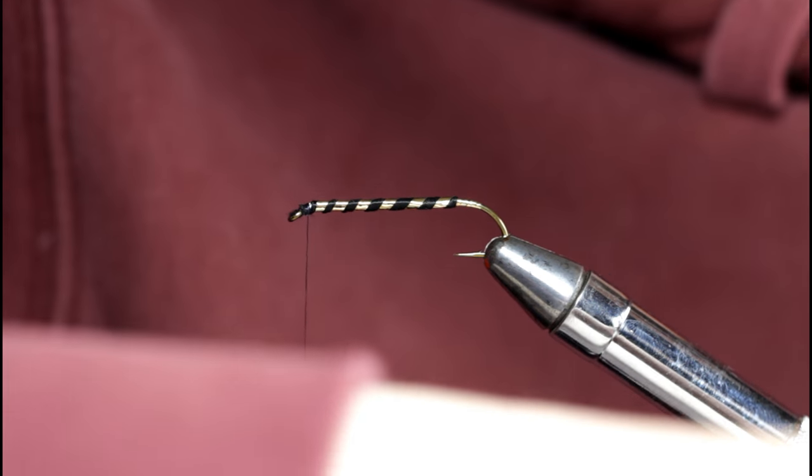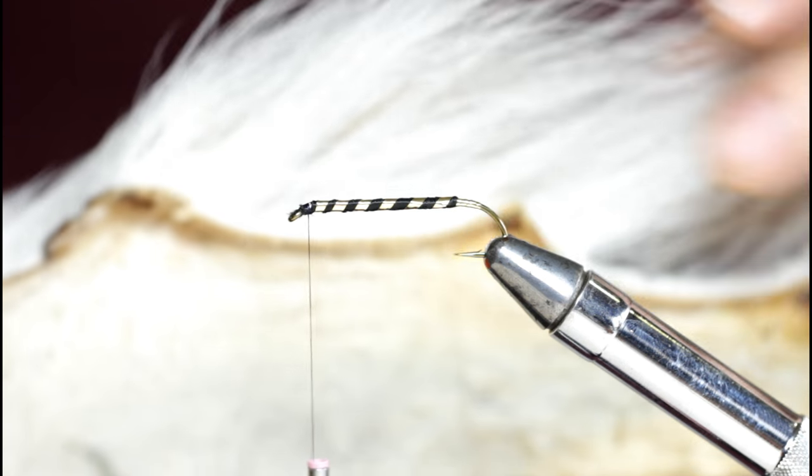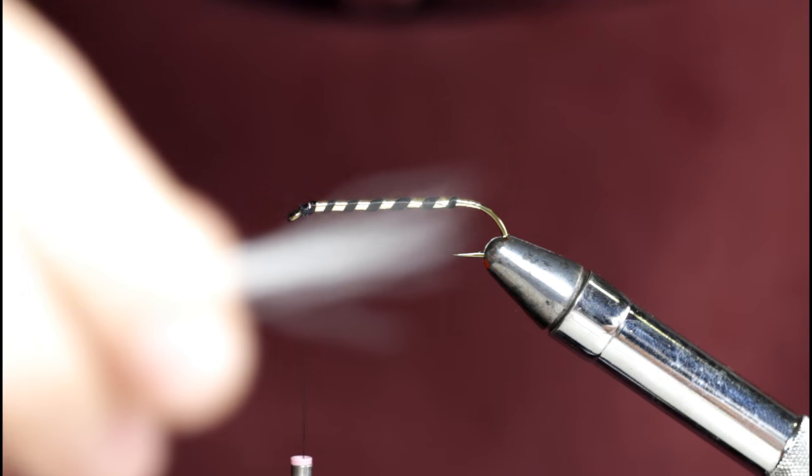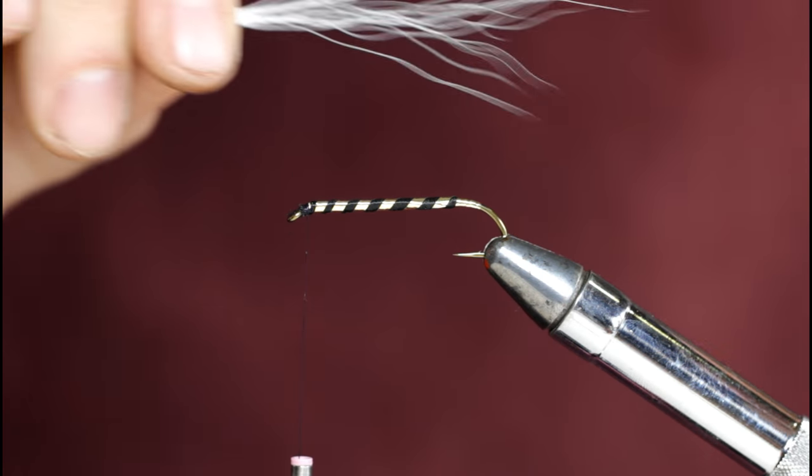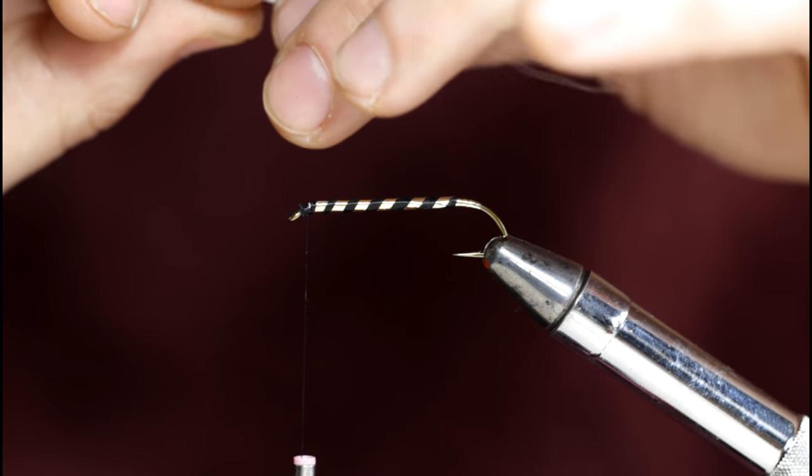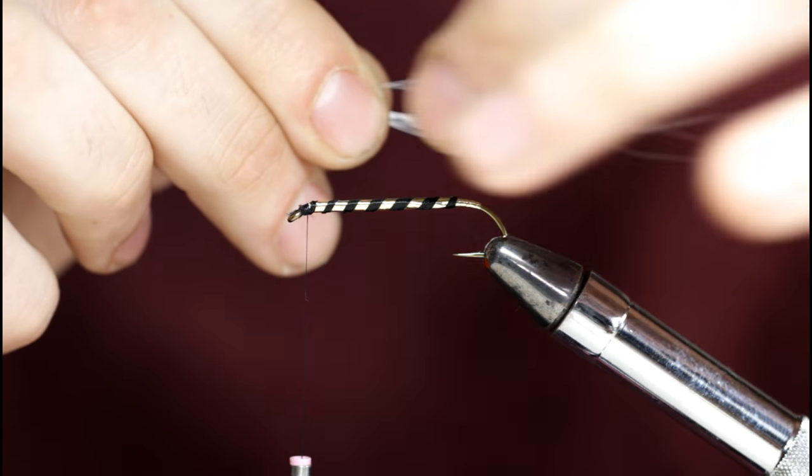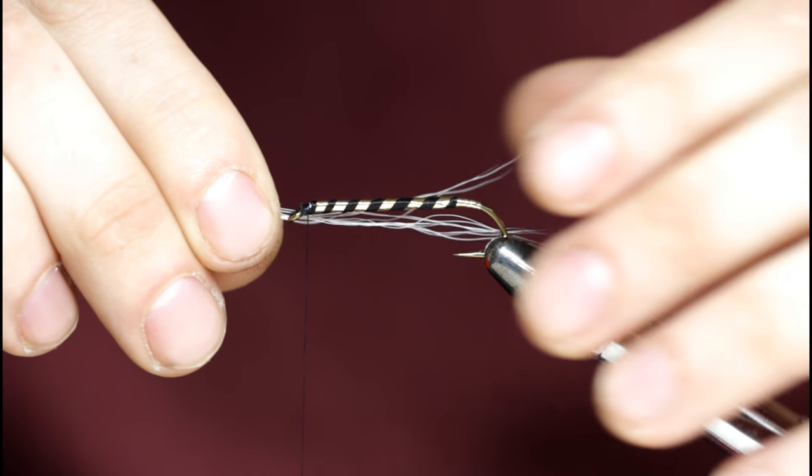I'll take a few turns and just kind of level this out so I have something even to tie into. I'll grab the next material which is going to be some bucktail, natural white off of a natural bucktail. I'll pull out all of the short fibers here and all the long ones and just try to separate this into a sparse clump.